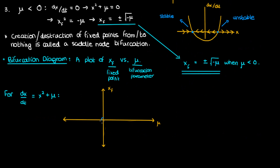When μ is zero we have a half-stable fixed point at x_f = 0, represented by a half-shaded point at the origin. For negative μ, the fixed point x_f = ±√(−μ) traces a left-opening parabola. We distinguish stability on the diagram: the lower curve representing the stable fixed point is drawn solid, while the upper curve representing the unstable branch is drawn dashed.